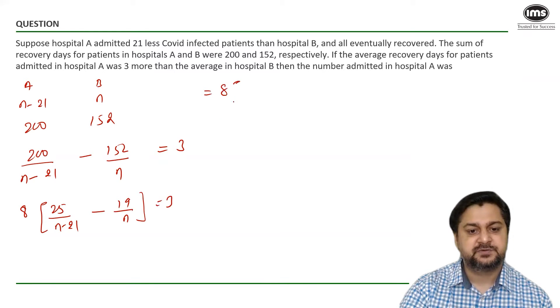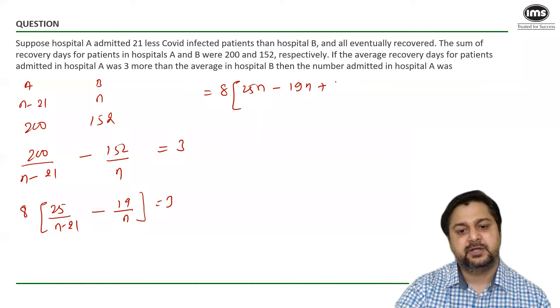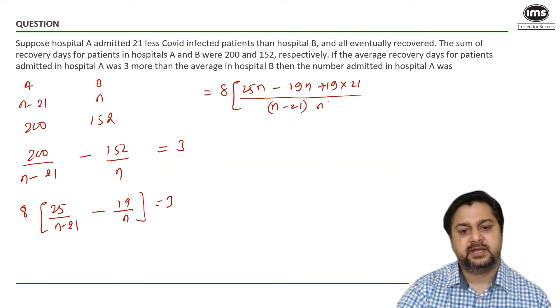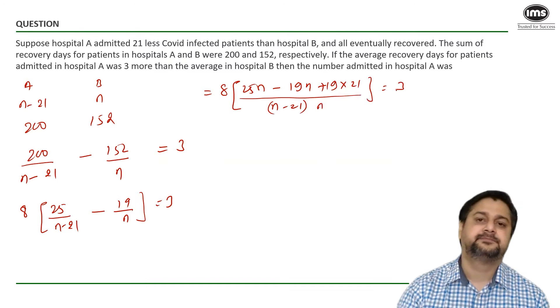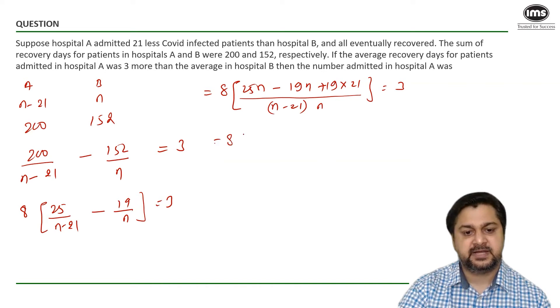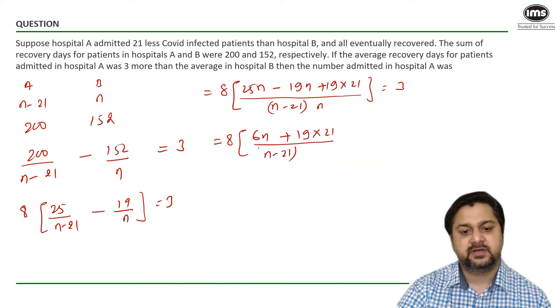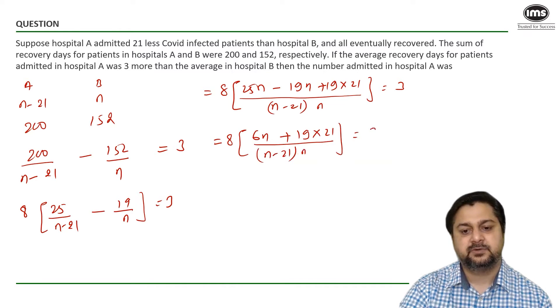Now if I cross multiply this would give us 25N minus 19N plus 19 into 21 over N minus 21 into N is equal to 3. Now I know 25 minus 19 is 6. So let me write it another step.